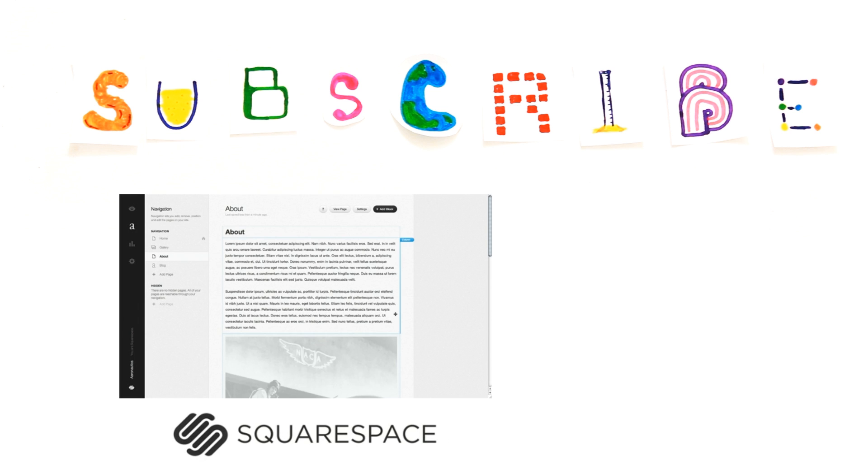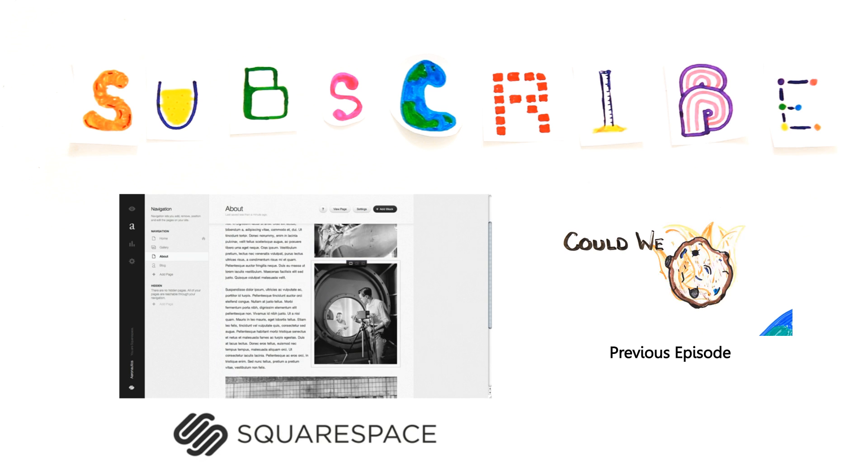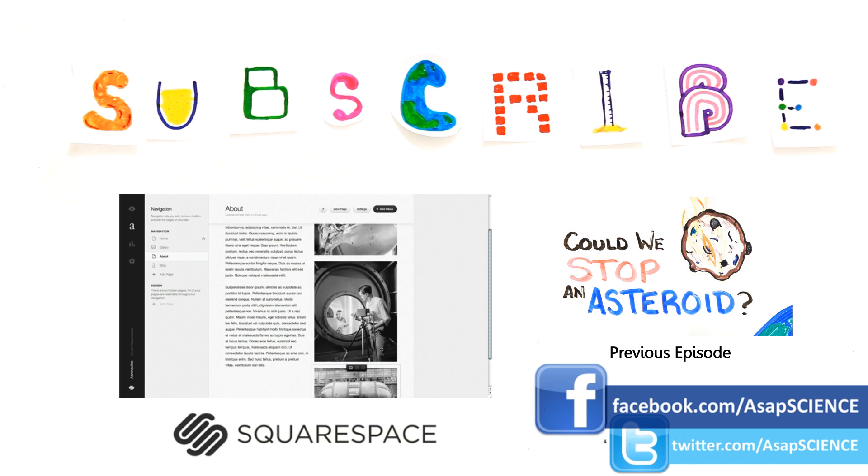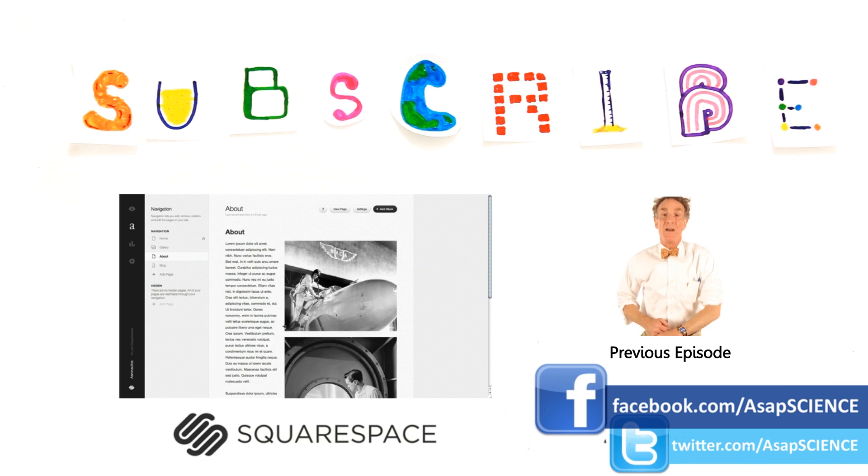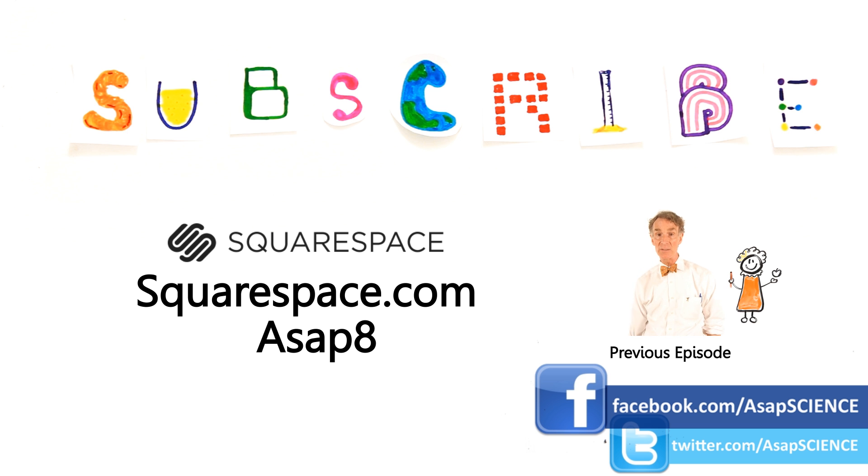With modern templates, mobile responsive designs, simple drag-and-drop tools, and 24-hour support, you can create a professional website or online portfolio in just a few minutes. For a free trial and 10% off your first purchase on new accounts, head over to Squarespace.com and use the offer code ASAP8. Thanks again to Squarespace for supporting this episode of ASAP Science.